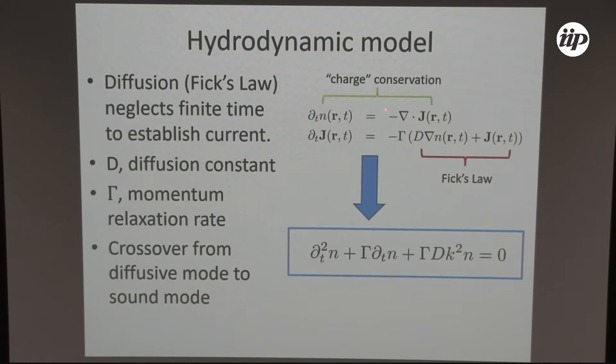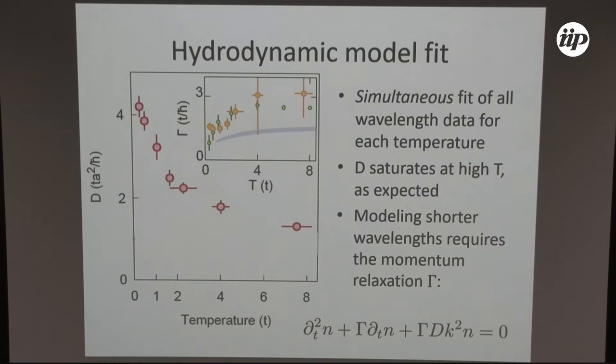What we do in the end is use a hydrodynamic model. What we put in the hydrodynamic model is charge conservation, and we put a Fick's law of diffusion in there. But we say that the residual Fick's law essentially decays exponentially with the momentum relaxation rate Γ. I don't want to go into all the details of the derivation of this model. You can also derive it directly from hydrodynamics under some limits. From these equations, you can derive a differential equation ∂²n + Γ∂n + Γ Dk²n = 0 for your time evolution of the density. Using this as a fit, we can do a simultaneous fit to all these sinusoidal decay curves that I showed you before. We also did it at different temperatures. It's a pretty big data set. From that, you always get the momentum relaxation rate and the diffusion constant. Then we can plot the diffusion constant and momentum relaxation rate versus temperature.